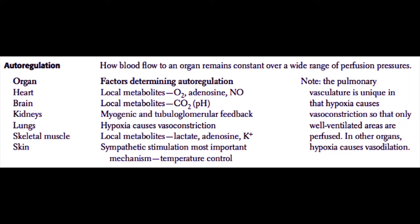In the lungs, different arterioles all have different levels of oxygenation. The lung is able to vasoconstrict areas that are not being well ventilated, so that only the well-ventilated areas are being well perfused. We call this hypoxic vasoconstriction. In other organs, hypoxia causes vasodilation in order to increase blood flow, so the lungs are unique in that aspect.